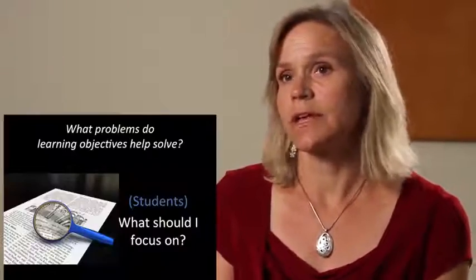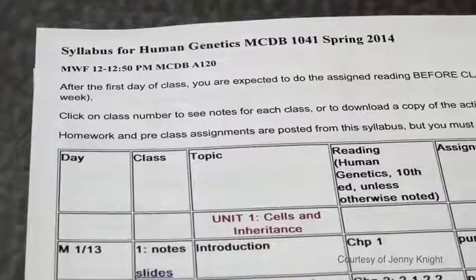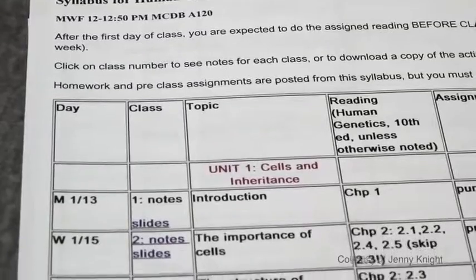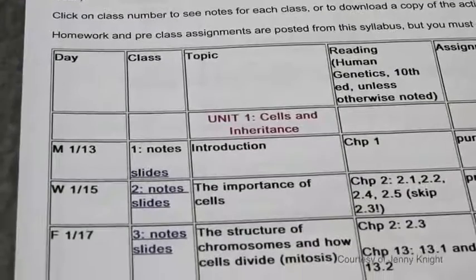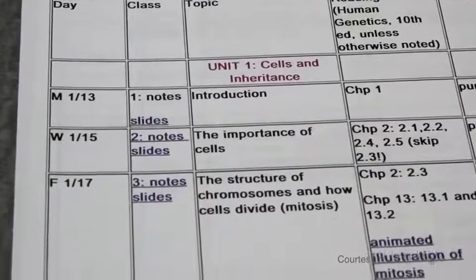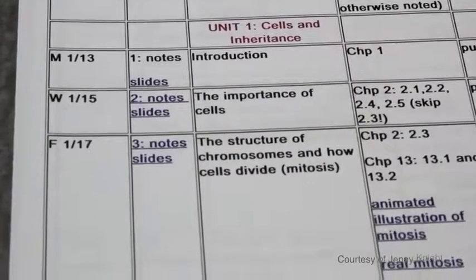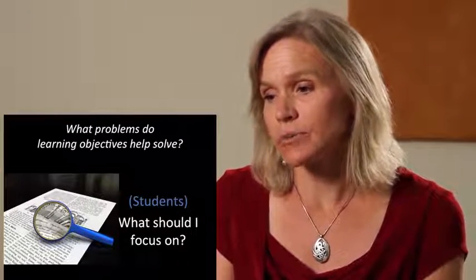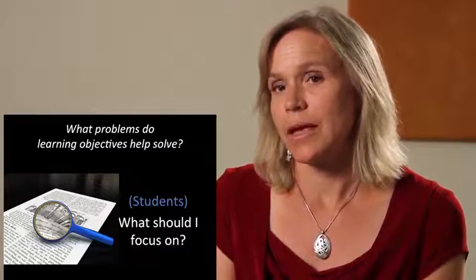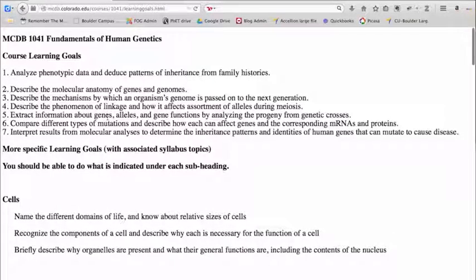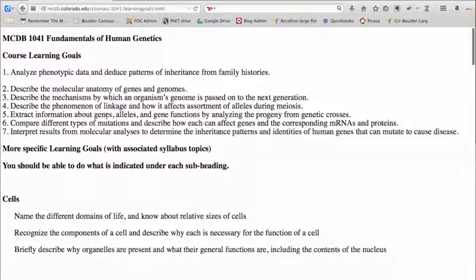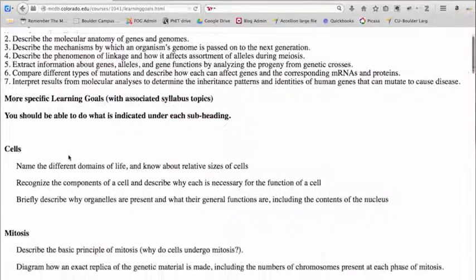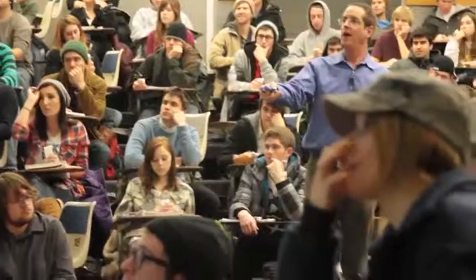When a student looks at a syllabus for their class, they might just see a list of terms they're not even very familiar with and what dates they'll be taught. That doesn't really give them a clear picture of what the instructor thinks is important — it just gives them a list of topics, and it may be unclear what to focus on. A list of learning objectives allows a student to focus on maybe a class-by-class basis. There might be a larger-scale goal for a week communicated clearly, and then a whole series of more specific objectives, so the student knows very clearly what the instructor is hoping to accomplish during that time frame.